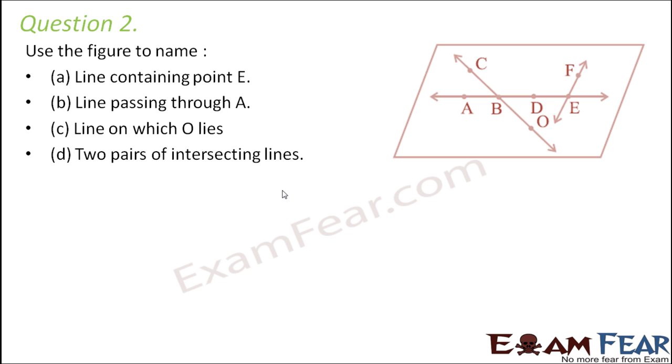Question number 2, use the figure to name line containing point E. So where do we have E? This is E. Now which is the line that contains E? So if you look at this point E, it is present on this line that is AE. So AE is one line which contains E.